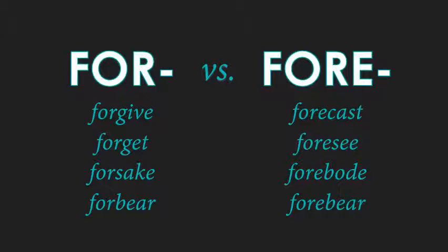'Forebode' — to forebode is to have an omen or a sign of what is to come. 'Bode' has to do with a sign or symbol that something bad is going to happen. So if you have a 'foreboding,' you have a bad feeling that something's going to happen that you won't like. That's a great word for Halloween time. Before you go into the haunted house, you have that bad feeling — it has to do with something 'before.'